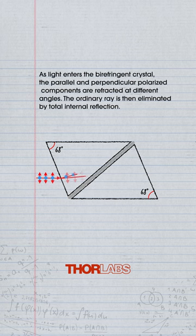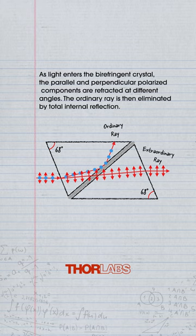As light enters the birefringent crystal, the parallel and perpendicular polarized components are refracted at different angles. The ordinary ray is then eliminated by total internal reflection.